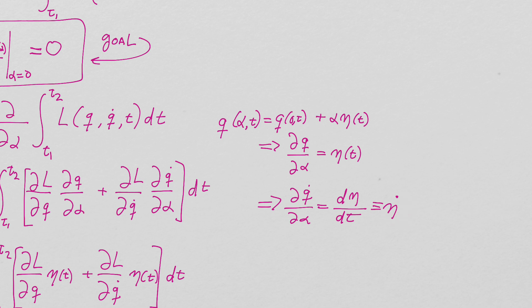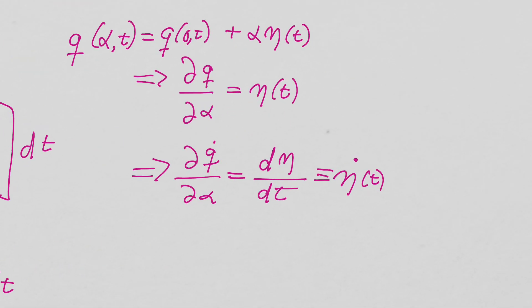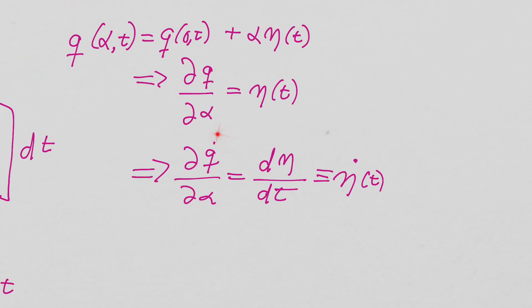So you take the derivative, you're left with eta of t. And then the partial of q dot with respect to alpha ends up being dA to dt, which we'll call eta dot. And of course I should always remember eta dot itself is a function of time.